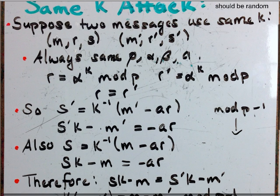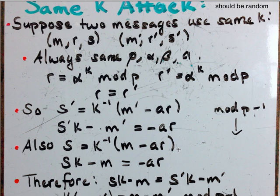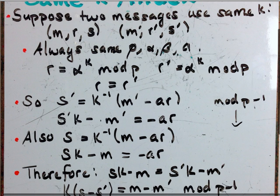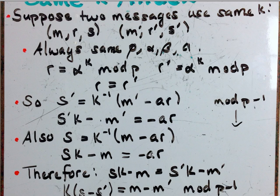Also, taking the first message up here, S equals K inverse M minus A R. Again, I can solve for the negative A R and say that S K minus M equals negative A R. Now, both this term and this equals negative A R. Again, it's the same negative A R because A doesn't change and R didn't change because K didn't, because we forgot to change K.